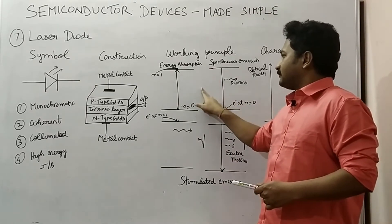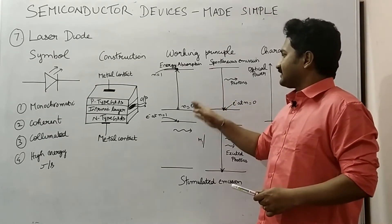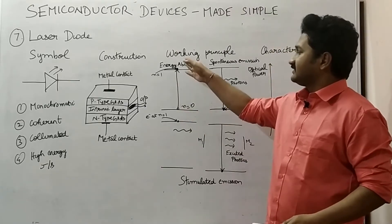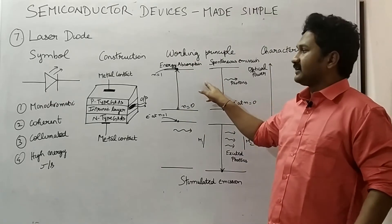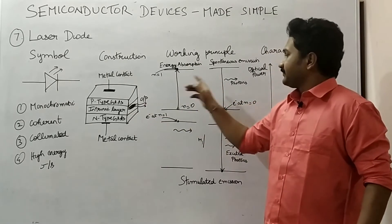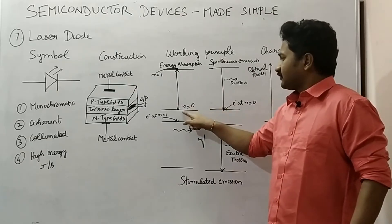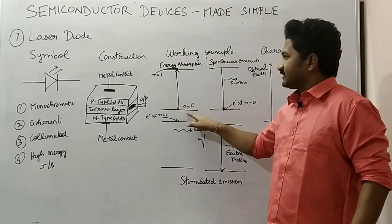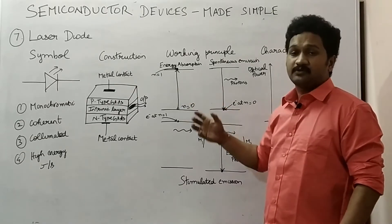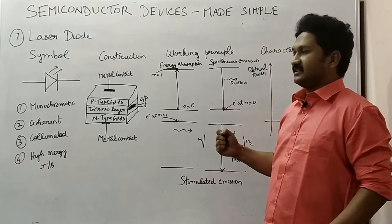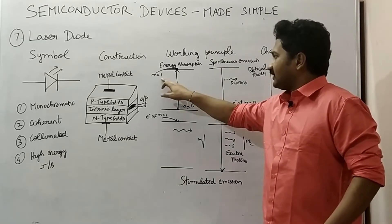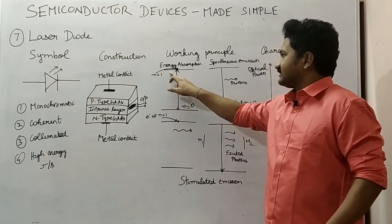The first concept is energy absorption, where electrons rise to the higher energy state. When external voltage is supplied to the laser diode, the electrons from the lower energy state move to the upper energy state by absorbing some energy, so n=1 is the higher energy state.